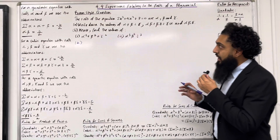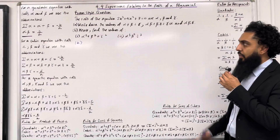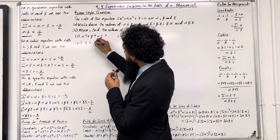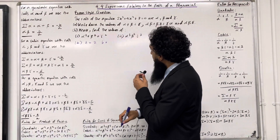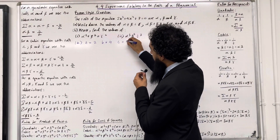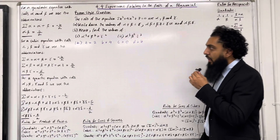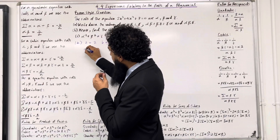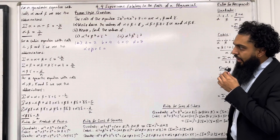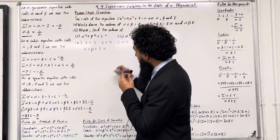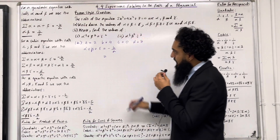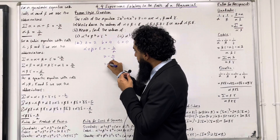Let's have a look at the solution to part A. First I'm going to read off the coefficients of the cubic. A, the coefficient of x cubed, is equal to 2. B, the coefficient of x squared, is equal to 4. C, the coefficient of x, is 0. And D, the constant term, is equal to 7. For a cubic, alpha plus beta plus gamma is given by minus B over A, equal to minus 4 over 2, which is minus 2.